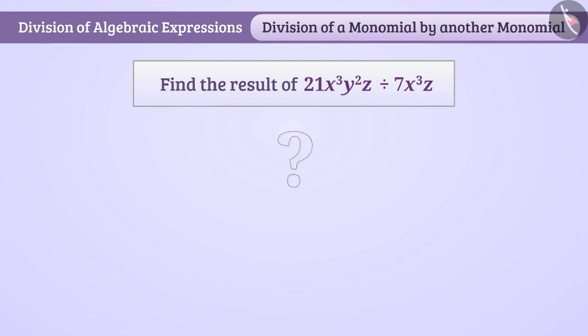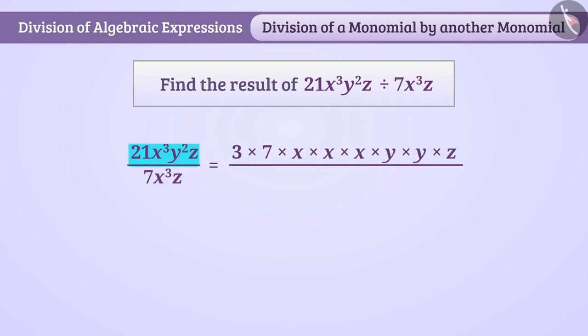Let me tell you. We can write the factors of 21x cube y square z like this. By cancelling the common factors in the numerator and the denominator, we get the result of division as 3y square.